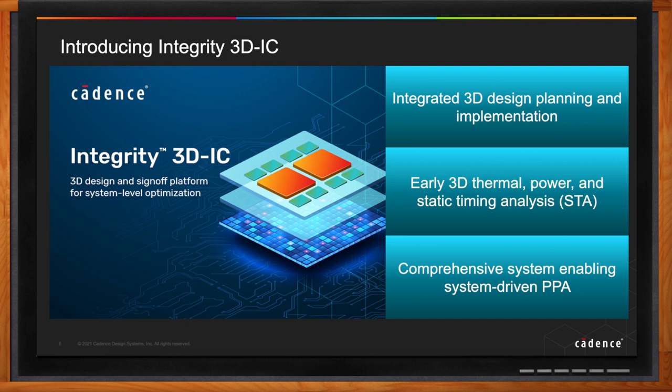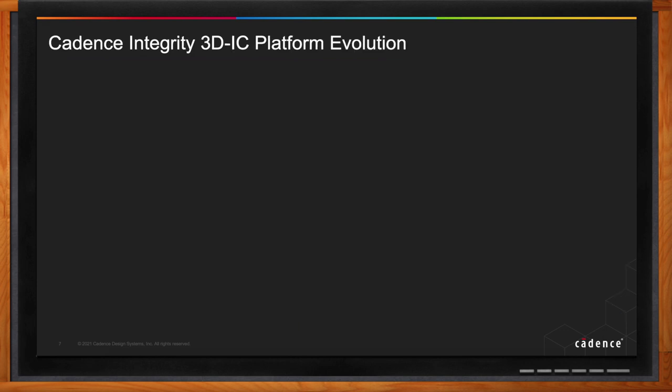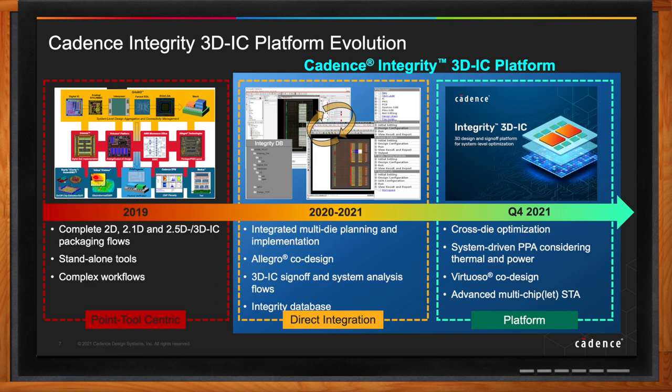This new Integrity 3D IC is part of the Cadence Integrity platform. 3D IC design has been going on for the last few years, and it was possible to do that using a die-by-die approach — you do a single die at a time. Cadence has the full toolset for doing that: tools for aggregating the system, for doing implementation in different platforms, and all the analysis. But they were all still point tools, which involved a lot of file passing from one to the other, causing inefficiencies and human and machine errors.